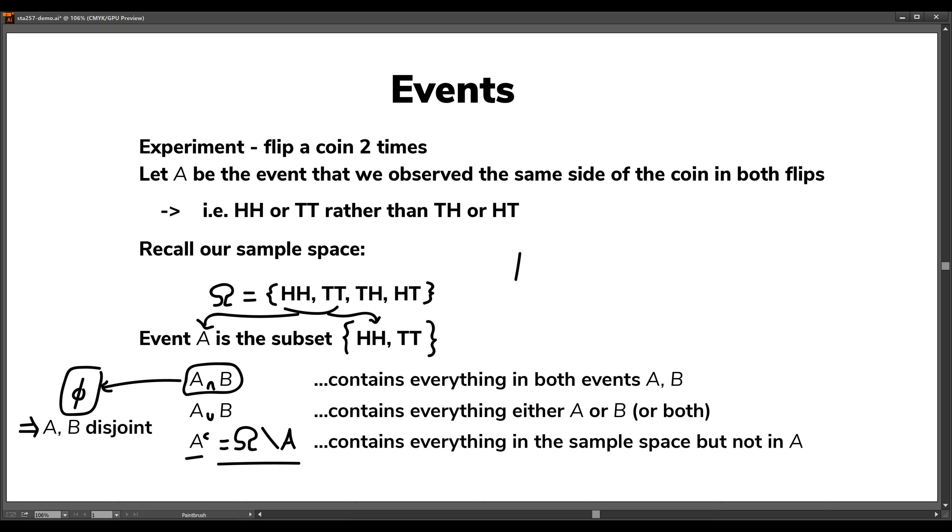So let's say B was the event that we did not observe the same side of the coin in both flips. If that was event B, then A and B are obviously disjoint.